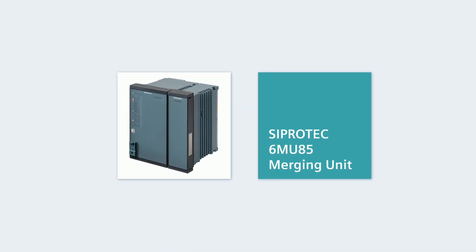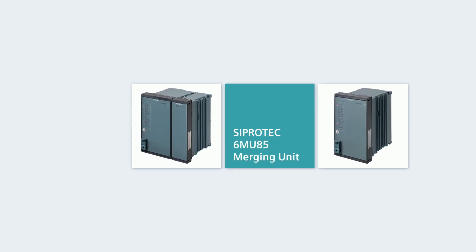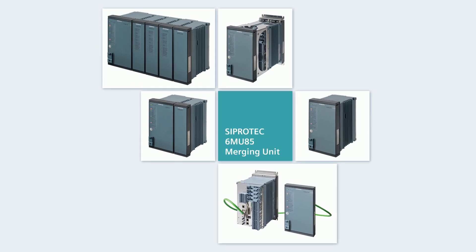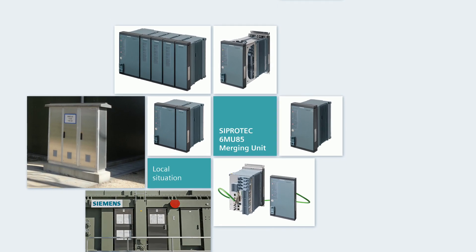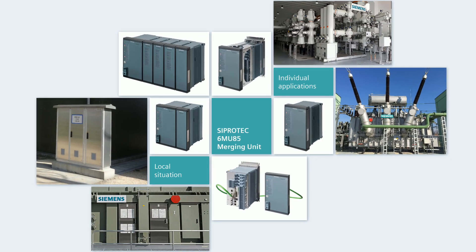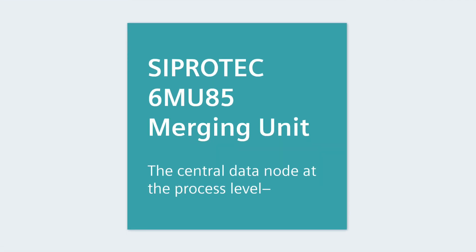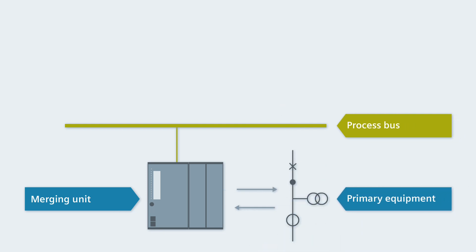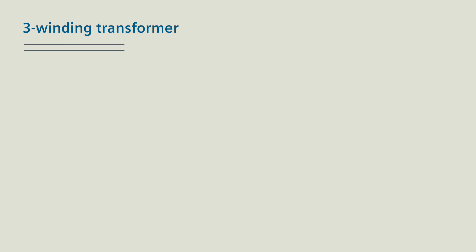This is a C-Protek 6MU85 merging unit. This is also a C-Protek 6MU85 merging unit. And this, but also this, and this. The C-Protek 6MU85 merging unit has many faces and, just like all C-Protek 5 devices, adapts to your local situation and your individual applications. But no matter what your personal C-Protek merging unit looks like, at the process level, it is always the central data node with automation. For the process bus, the C-Protek 6MU85 merging unit is the interoperable solution between primary equipment and secondary equipment. We'll show you how you can utilize this using a 3-winding transformer as an example.